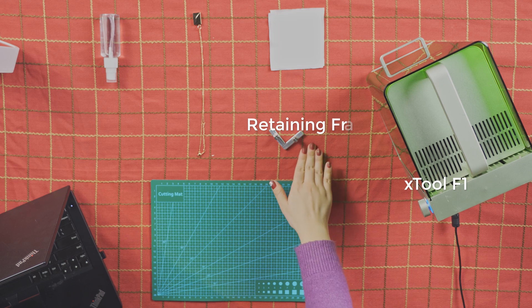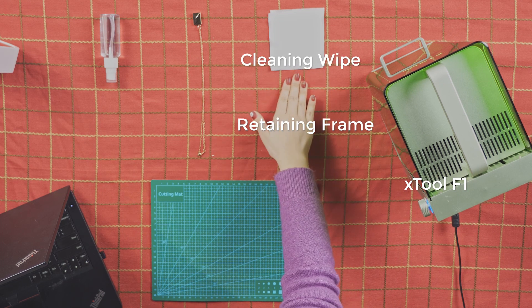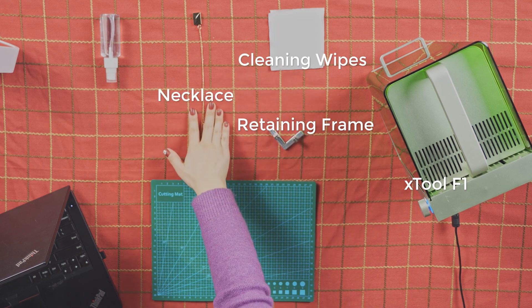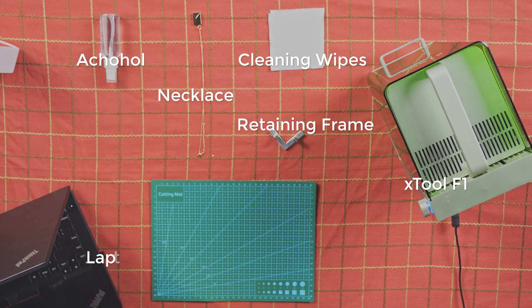We need our F1 machine, retaining frame for F1, cleaning wipes, Love Letter Envelope Necklace, alcohol, and our laptop.